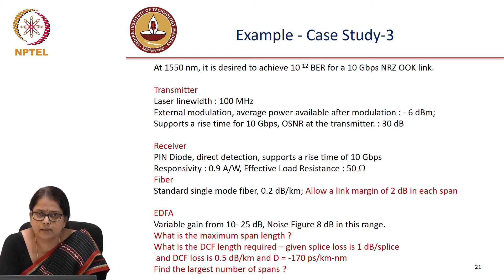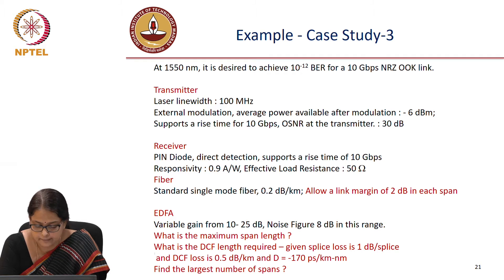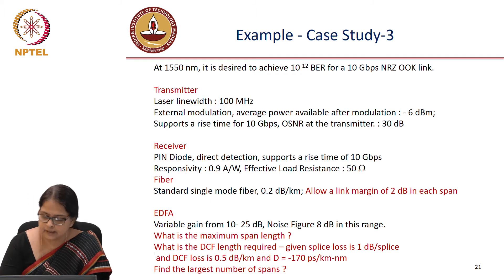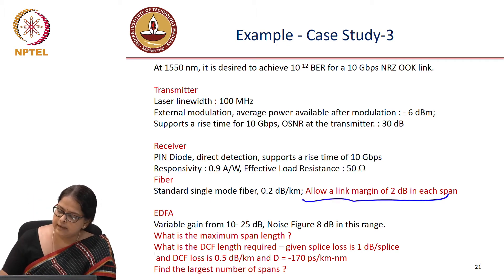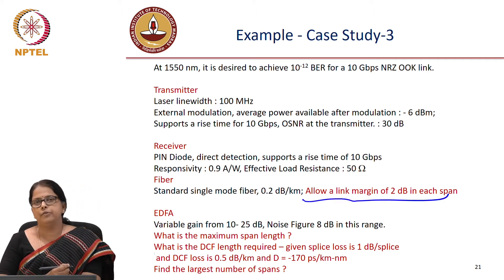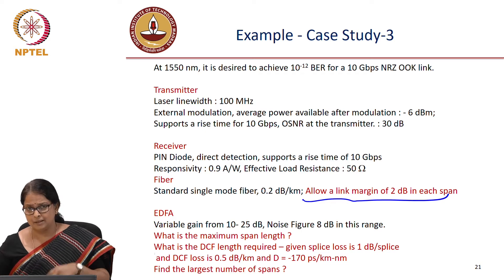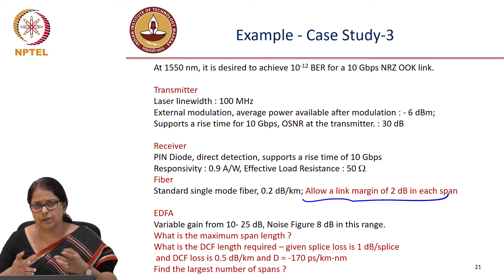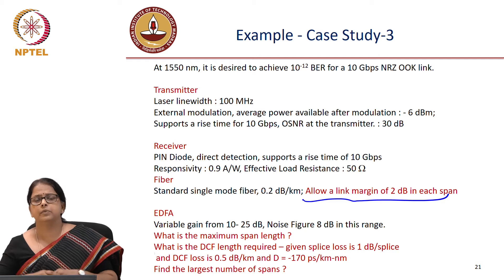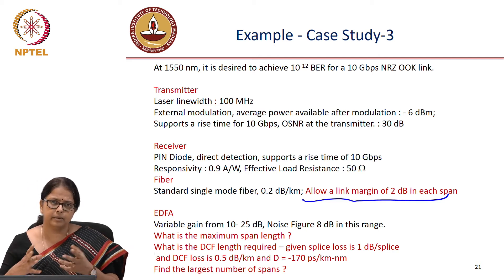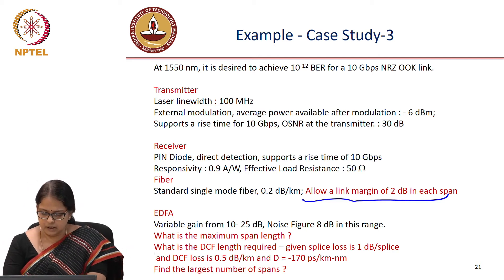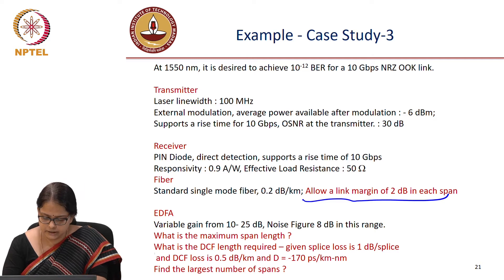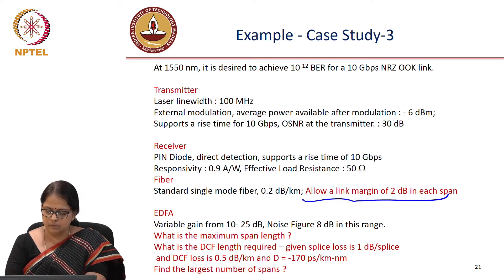The transmitter parameters are the same, the receiver parameters are also the same, except that now we add a link margin of 2 dB in each span. This is basically because you may have some splice loss when you have dispersion compensating fibres, so just add a margin of 2 dB. The question is: what is the maximum span length?